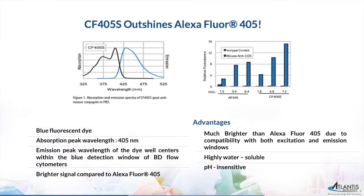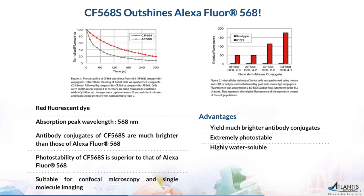Here are a few examples comparing CF dyes to Alexa dyes. CF405S outshines Alexa Fluor 405 as it is much brighter due to its compatibility with both emission and excitation windows. CF568 also outshines Alexa Fluor 568, as antibody conjugates of CF568 are much brighter, and the photostability of CF568 is superior to that of Alexa Fluor 568.